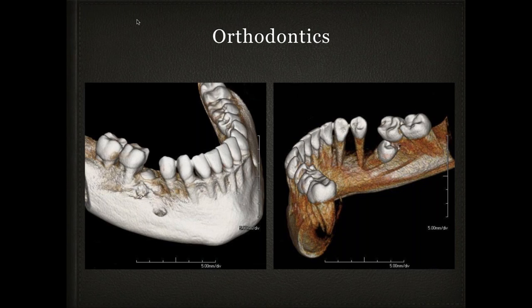If you do orthodontics, it's really useful to see anything out of the ordinary. In this case I've got a lower bicuspid tipped distally, rotated 180 degrees, and obviously fully formed — this patient must be 12 to 14 years of age. This is going to be a real challenge getting that tooth into proper position.